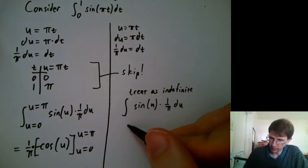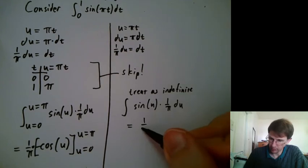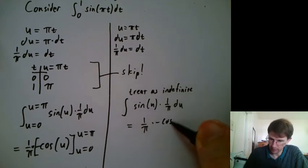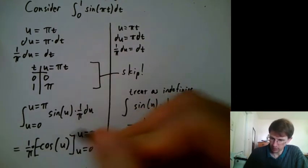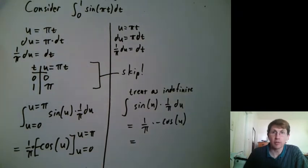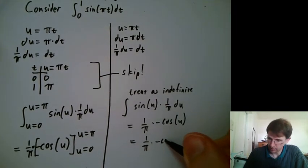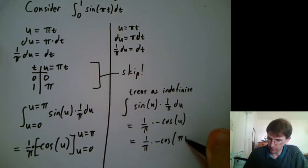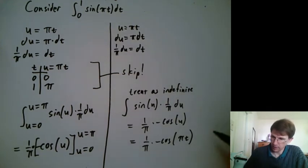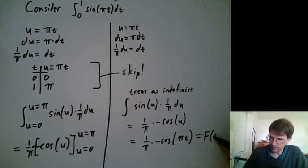And then what's that indefinite integral? It's 1 over π times negative cosine of u, which is what we did there. And then we're going to substitute back and say 1 over π times negative cosine of π t. And I'm going to call that big F of t.